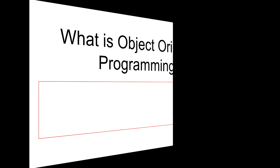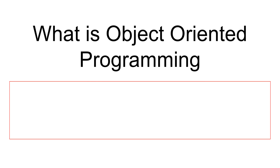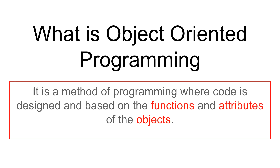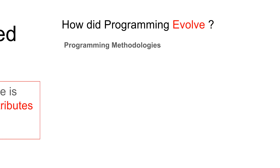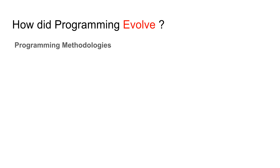Let us begin. If we have to define object oriented programming, a bookish definition will look something like this: it is a programming technique where the code is based on functions and attributes of the objects. Now this is a little difficult to understand, so let us break it down and take a step back to understand how object oriented programming came into existence.